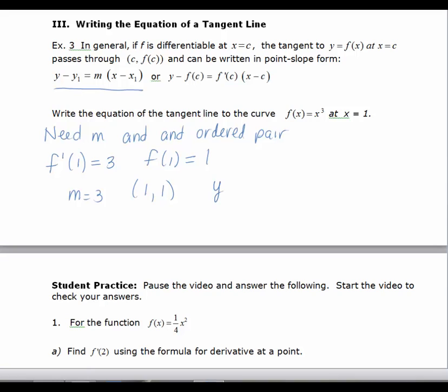So y minus 1 equals my slope, 3, times x minus 1. Sometimes it's appropriate to leave your equation in this form. I'm going to ask you, for now, to put this in slope-intercept form. So we'd have y equals 3x, we'd have minus 3, and then we'd have to add that 1 back on. So we have y equals 3x minus 2. Here is the equation of my tangent line. This is the original function, f of x.